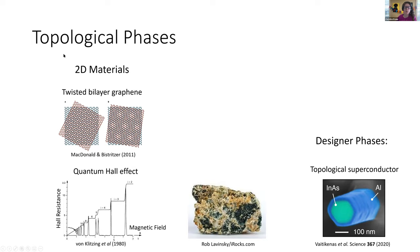There are different experimental systems where people look for topological phases. One is two-dimensional materials like graphene. Very popular recently is taking two layers of graphene, stacking them and twisting them — at the right twist angles you form an interference pattern between the two lattices, creating very flat energy bands in momentum space, which is a prime place to look for topological physics.